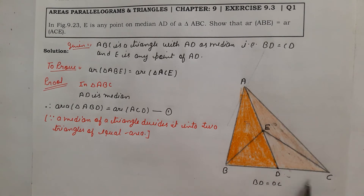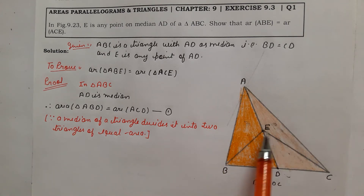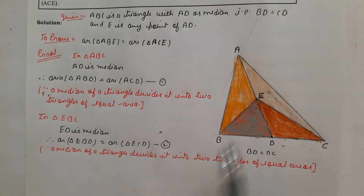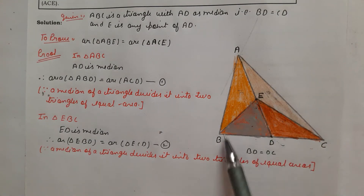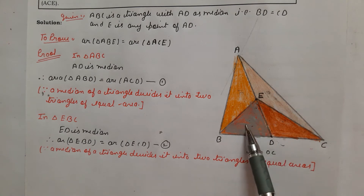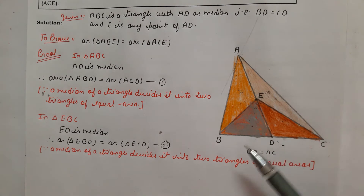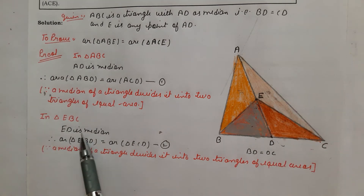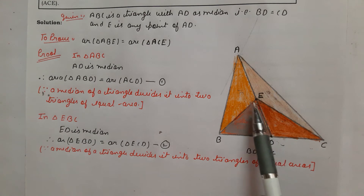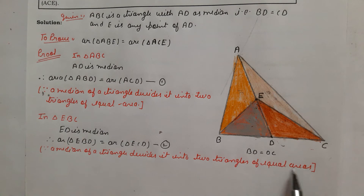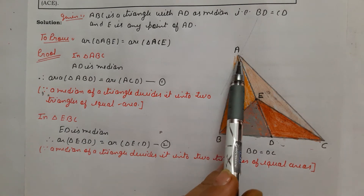Now in triangle EBC, ED is also a median because D is the midpoint of BC. So ED is the median of triangle EBC, and therefore area of triangle EBD is equal to area of triangle ECD. The reason is the same: a median of a triangle divides it into two triangles of equal area.